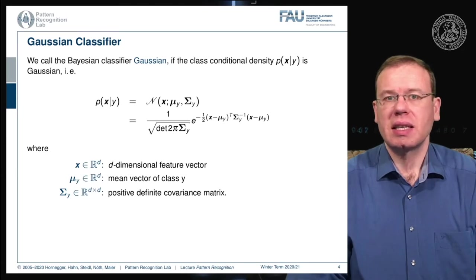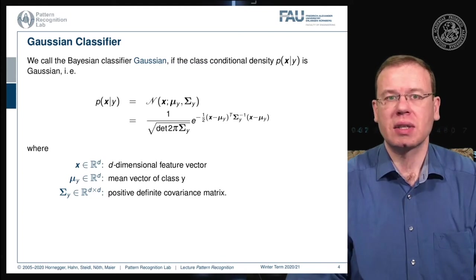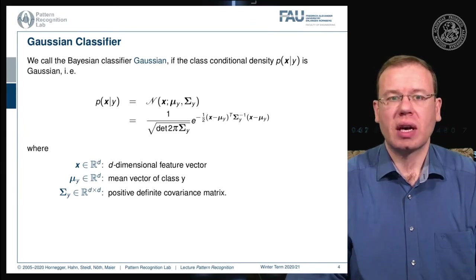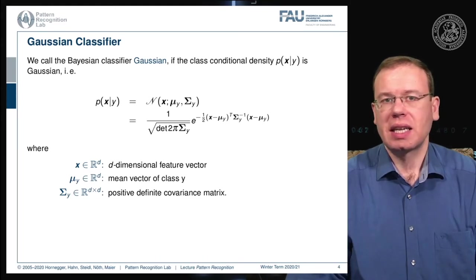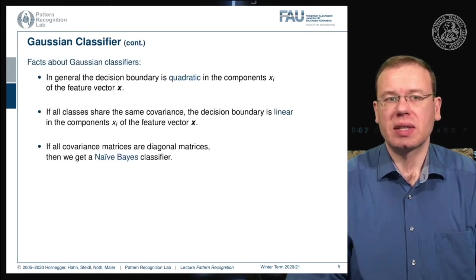In particular, we want to use the Gaussian distribution for modeling our class conditionals. The Gaussian probability density function is given by a mean and a covariance matrix. For class conditionals, the means and covariance matrices depend on the class y, which is why they have the respective index. The feature vector, the class means, and the covariance matrices — which are positive definite — should be familiar.